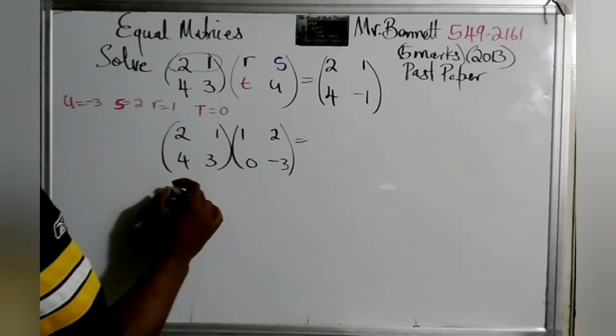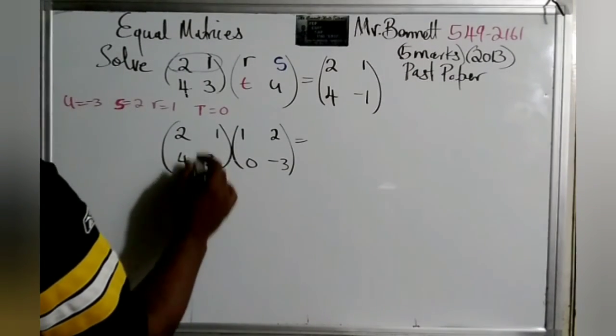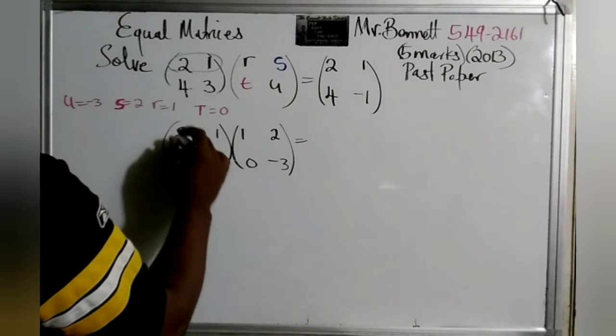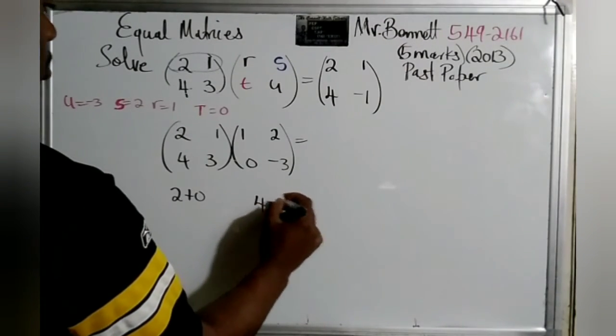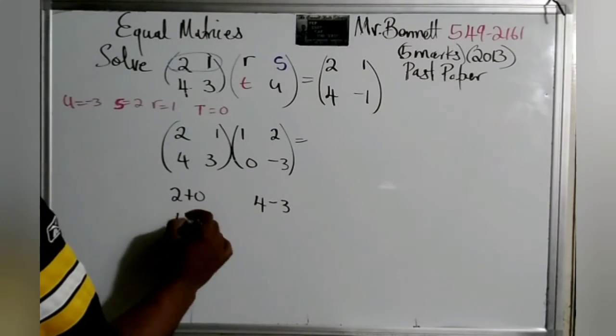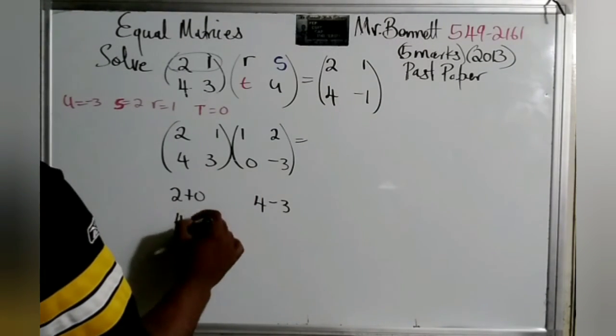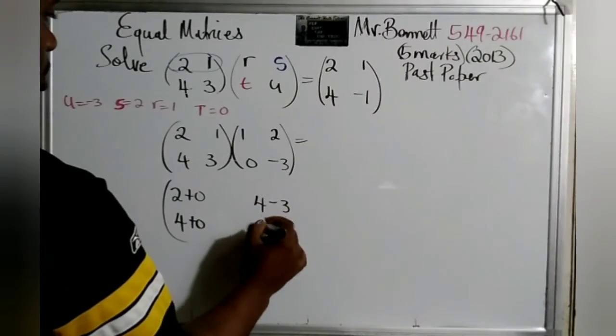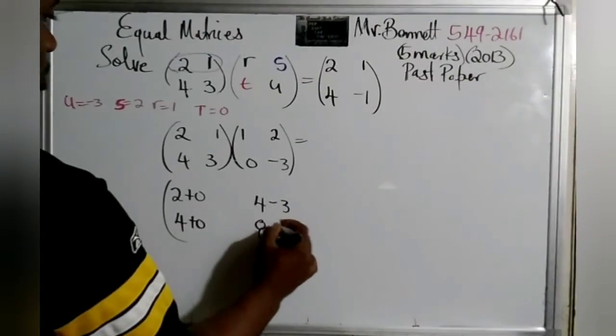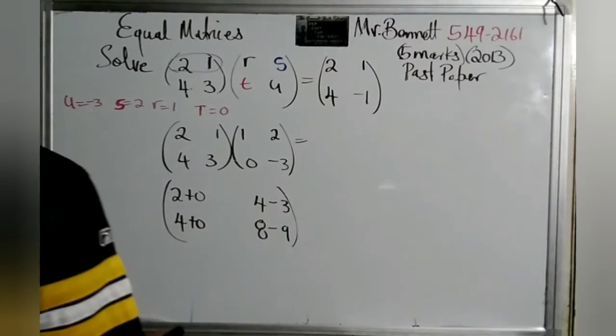Row by column. 2 times 1 is 2. 1 times 0 is 0. 2 times 2 is 4. 1 times negative 3 is minus 3. 4 times 1 is 4. 3 times 0 is 0. 4 times 2 is 8. 3 times that is negative 9. Let us compute now.